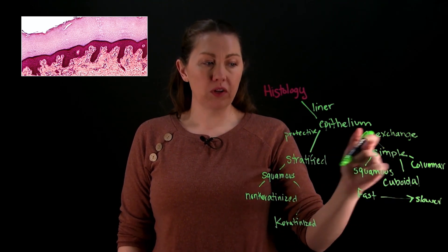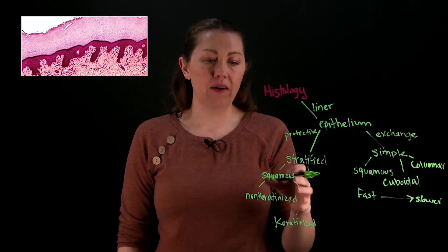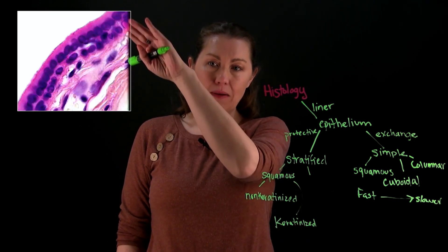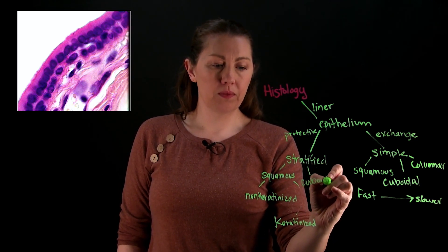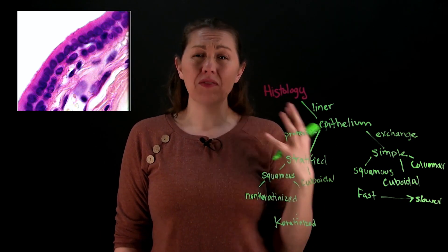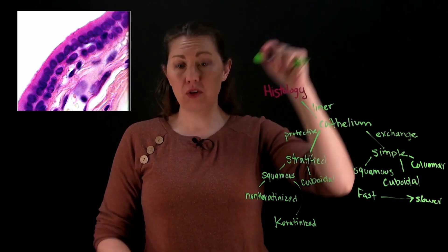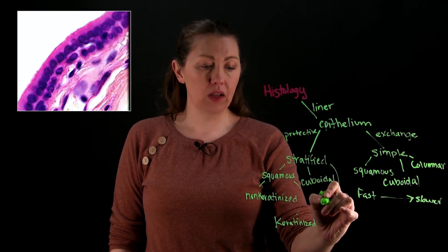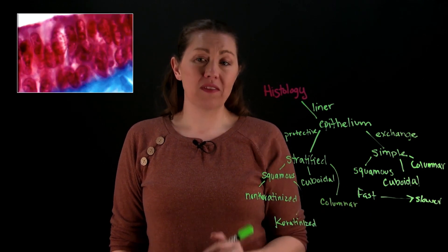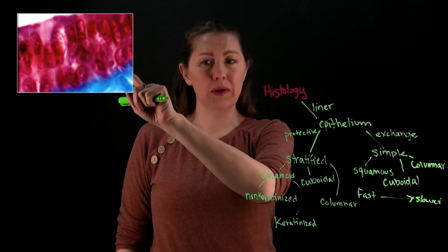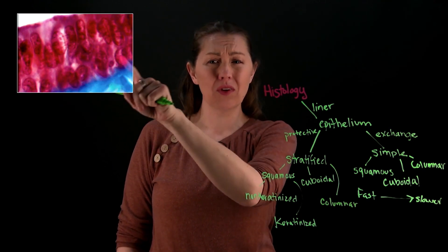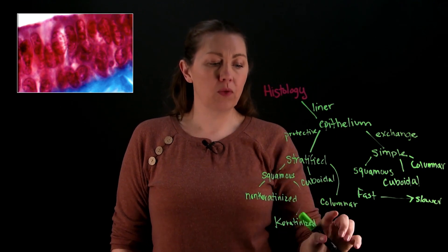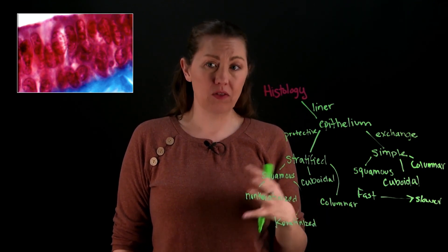You can also have stratified cuboidal and stratified columnar, though they're rarer than stratified squamous. Stratified squamous is the most common of the stratified options. Stratified cuboidal — boxes on top of boxes — is used in places like lining sweat glands, which face the external environment and need extra protection against pathogens. Stratified columnar is also used lining the ducts of sweat glands and is the only place you'll find it.